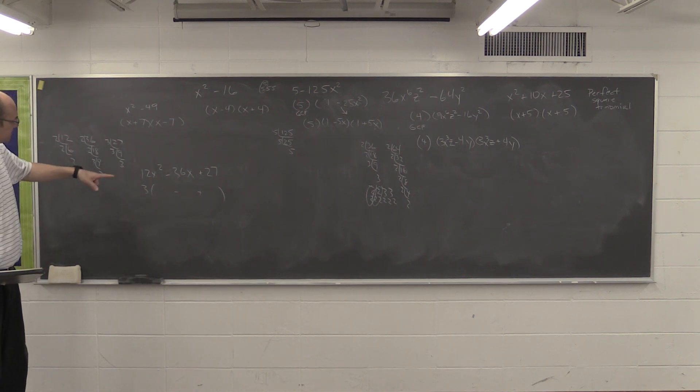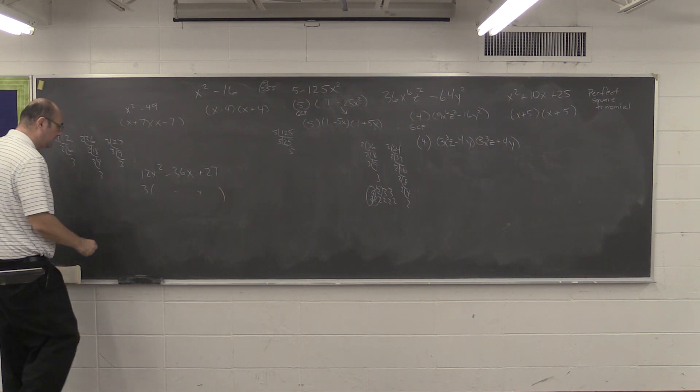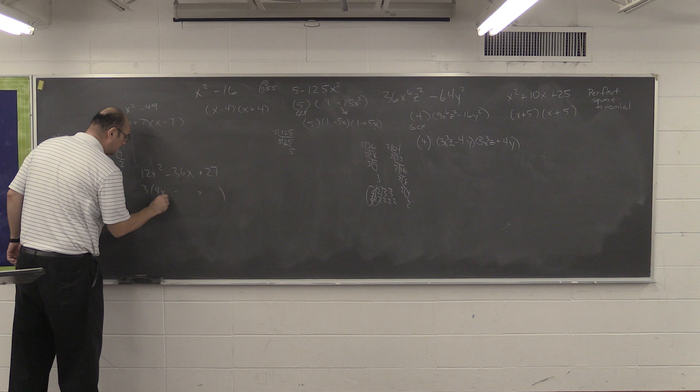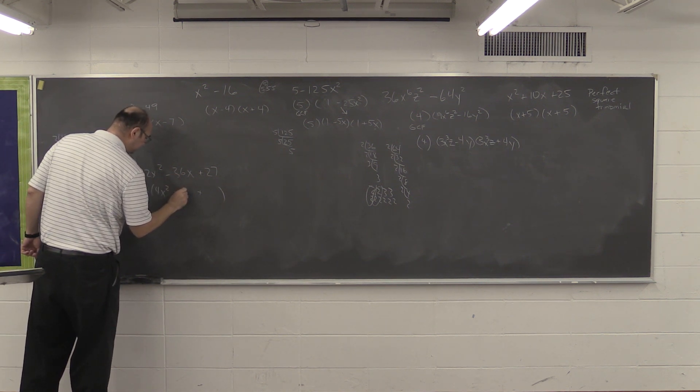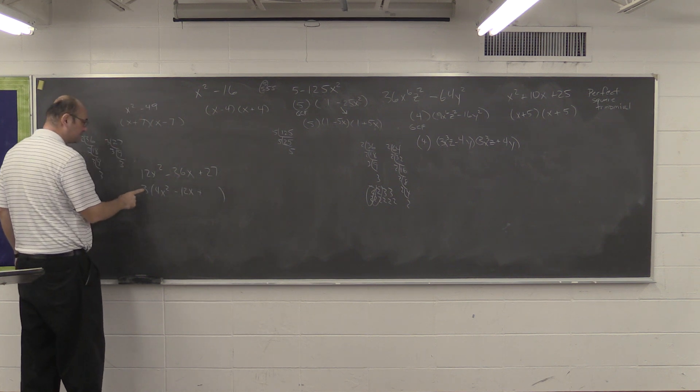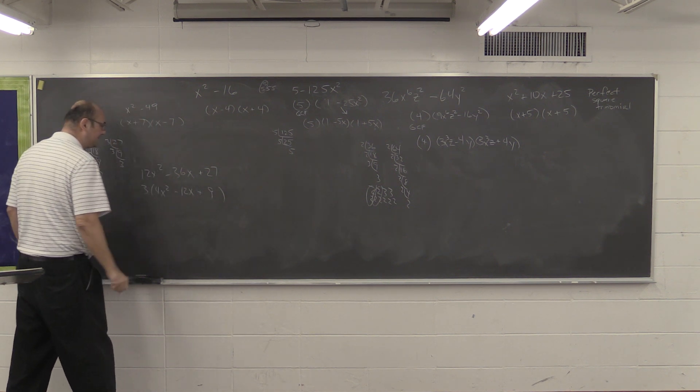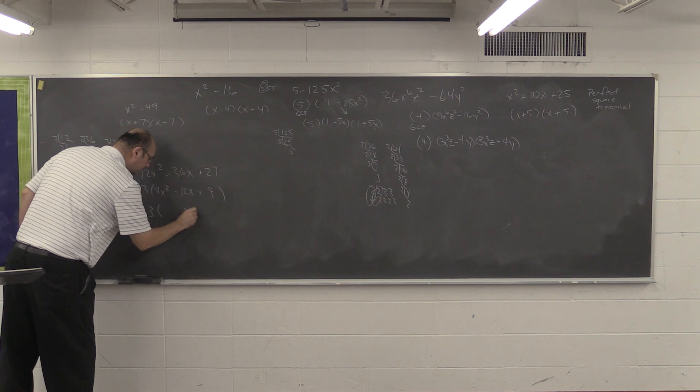Alright, and carry it down. 3 times what gives us 12x squared? That would be 4x squared. 3 times what gives us 36x? That would be 12x. And then 3 times what gives us 27? That would be 9. So, we carry our 3 down,